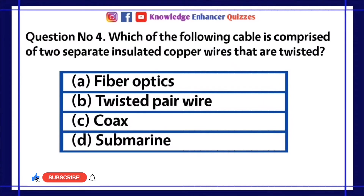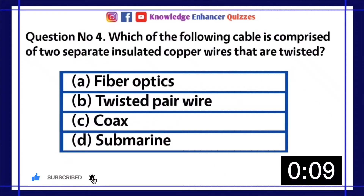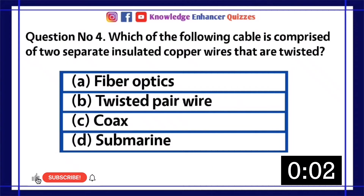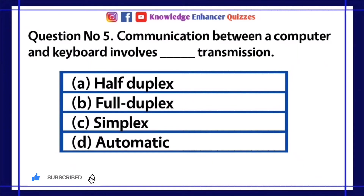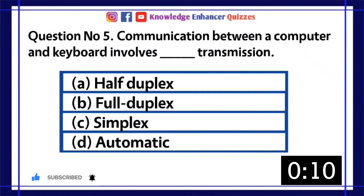Question number 4: Which of the following cable is comprised of two separate insulated copper wires that are twisted? A. Fiber optics. B. Twisted pair wire. C. Coax. D. Submarine. Option B is the right answer.